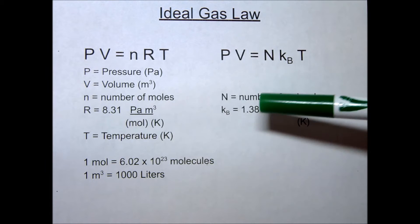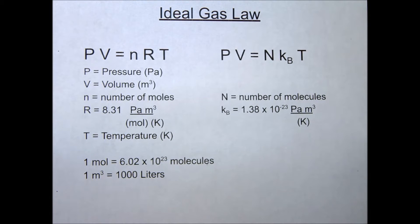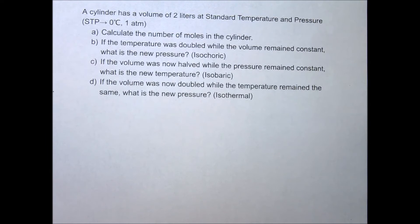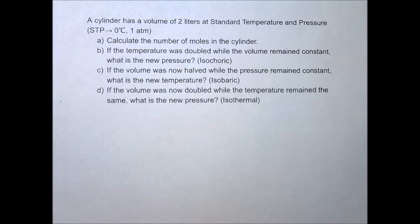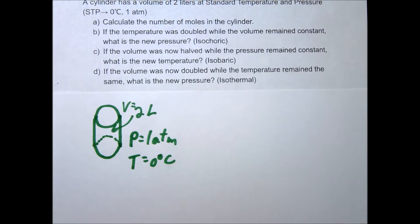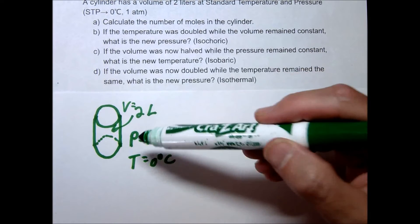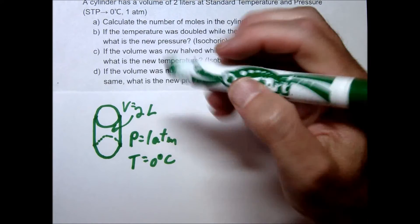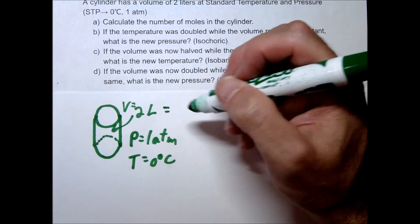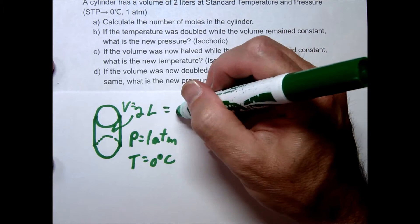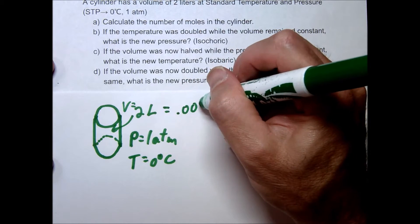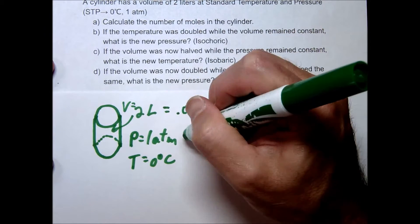See if you can find the relationship between those constants. Let's go ahead and do an example problem — take a few minutes to try to solve it on your own. I've sketched this out: here's our volume, pressure, and temperature. Remember you have to convert to the correct units.